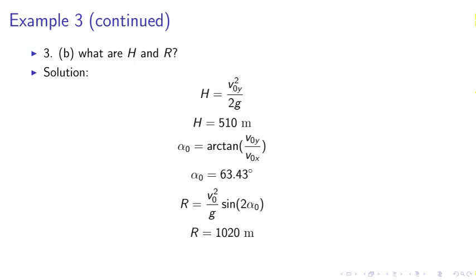We may substitute, use the formula h equals v zero y squared over 2g. So we obtain h equals 510 meters. We need to find what alpha zero is, the initial angle with respect to the ground. That's 63.43 degrees and we obtain the range as 1020 meters.